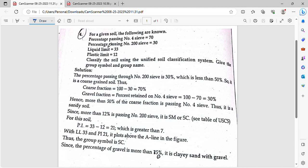What are the knowns of this problem? Percentage passing number 4 sieve is 70%. Percentage passing number 200 sieve is 30%. Liquid limit is 33. Classify the soil using the Unified Soil Classification System. Give the group symbol and group name. This is the question to be solved.